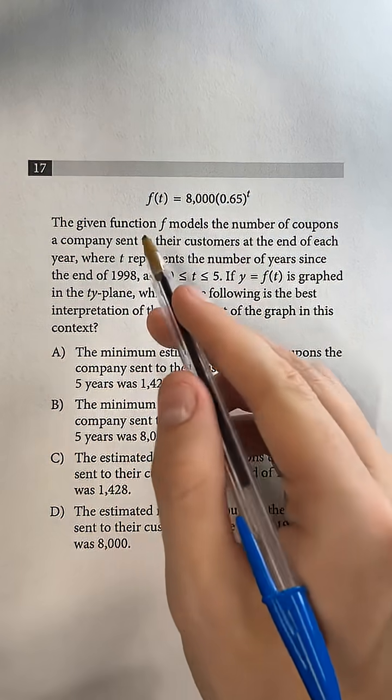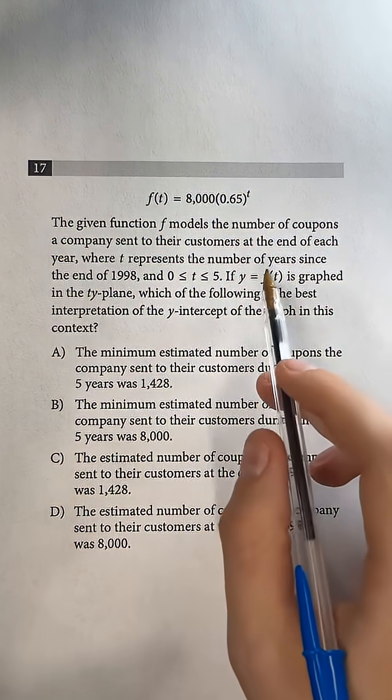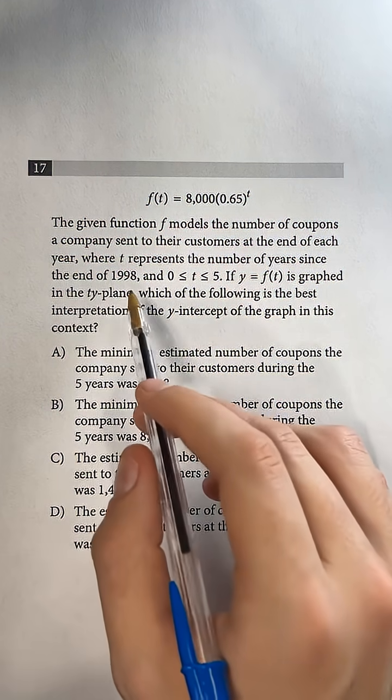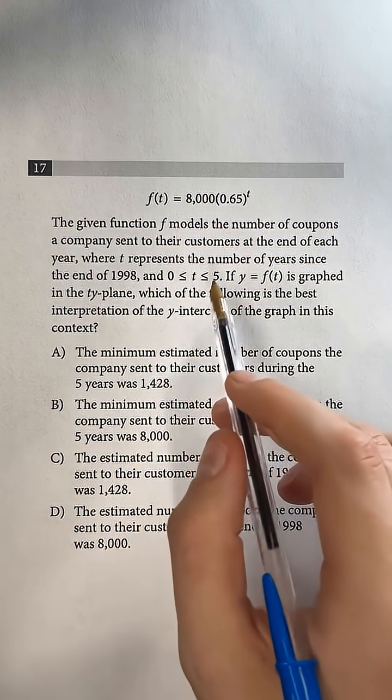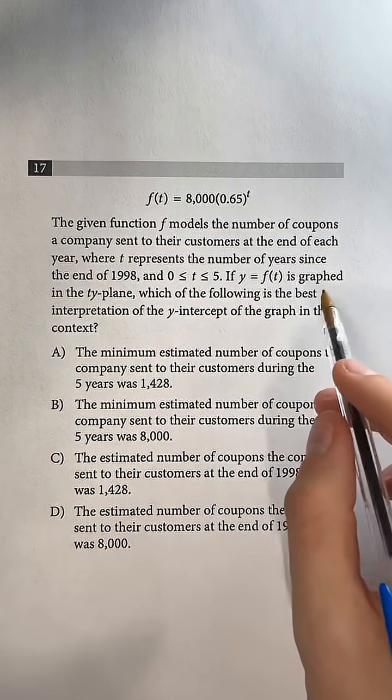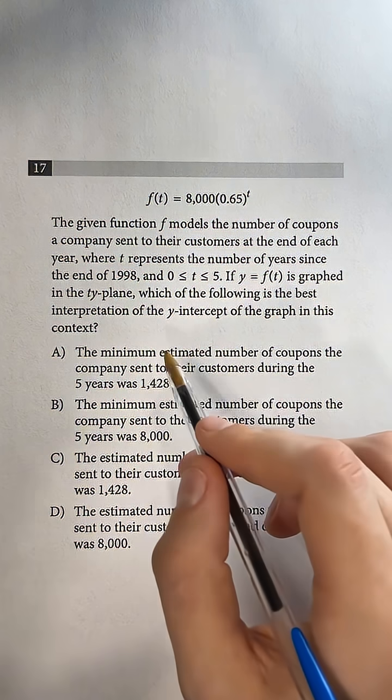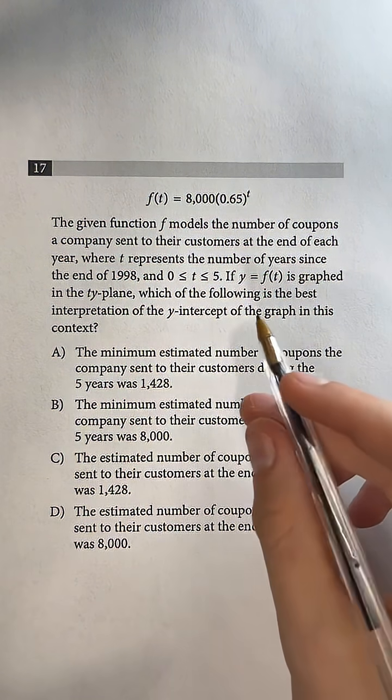Question 17. The given function f models the number of coupons a company sent to their customers at the end of each year, where t represents the number of years since the end of 1998, and 0 is less than or equal to t is less than or equal to 5. If y equals f of t is graphed in the ty plane, which of the following is the best interpretation of the y-intercept of the graph in this context?